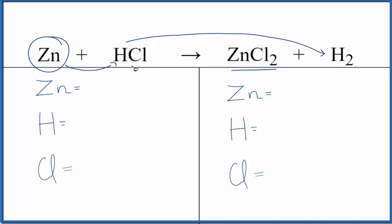You could also call this a redox reaction because the zinc and the hydrogen, they're changing their oxidation states. Let's balance the equation. One zinc, one hydrogen, and one chlorine in the reactants. In the products, we have one zinc, two hydrogens, and two chlorines.